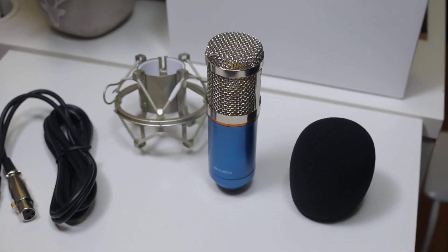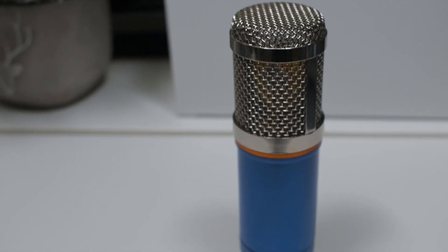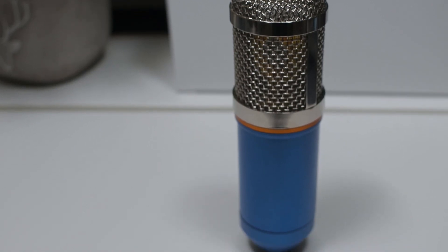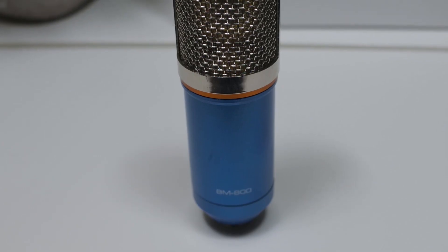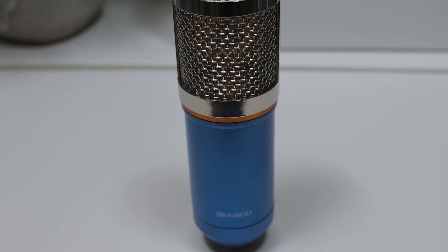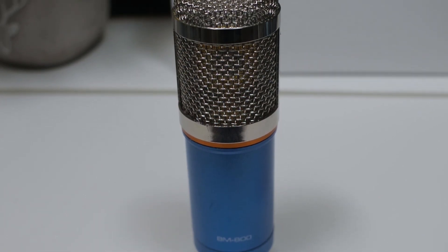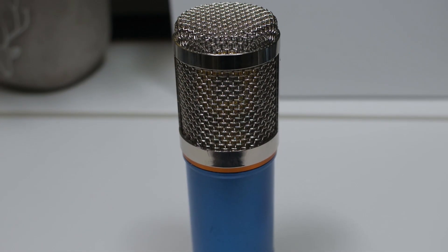The first step of building a studio condenser is to find a cheap microphone you can use as a donor body. Luckily, a while back, I did a review on a very cheap Chinese microphone that sounded pretty bad, so I decided to use the body for this project.